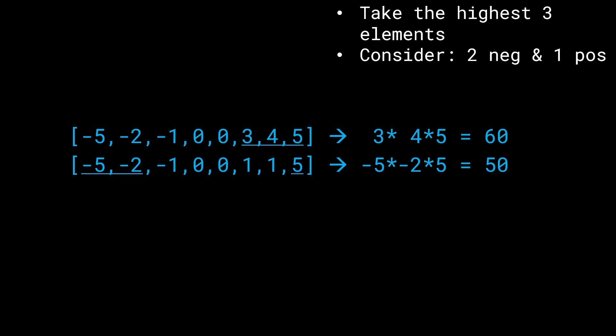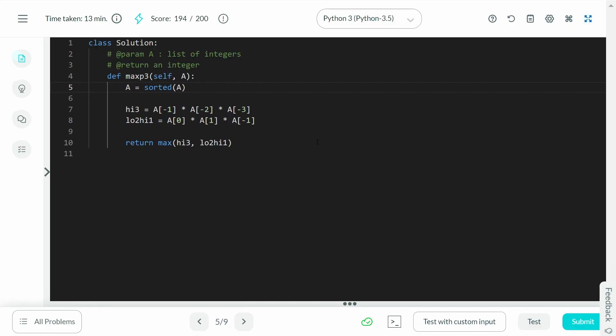Instead of saying two negative and one positive, since we're already sorting the array, we can say consider the lowest 2 and the highest 1. So either we take the highest 3 elements on the right-hand side, or we take the lowest 2 on the left and the highest 1 on the right. Now, let's talk about the code for the solution.